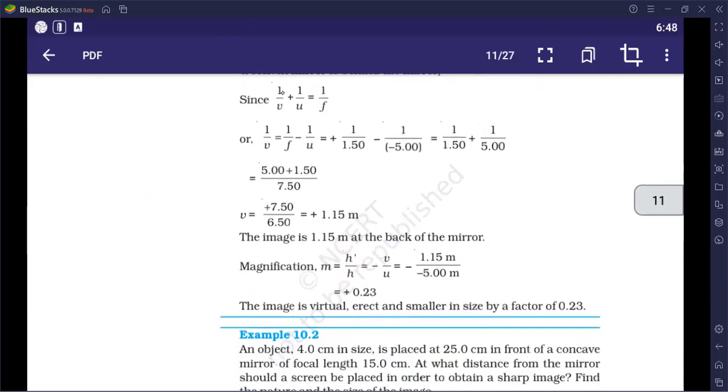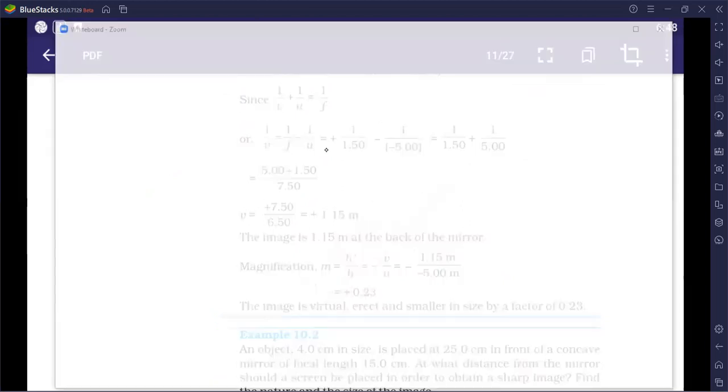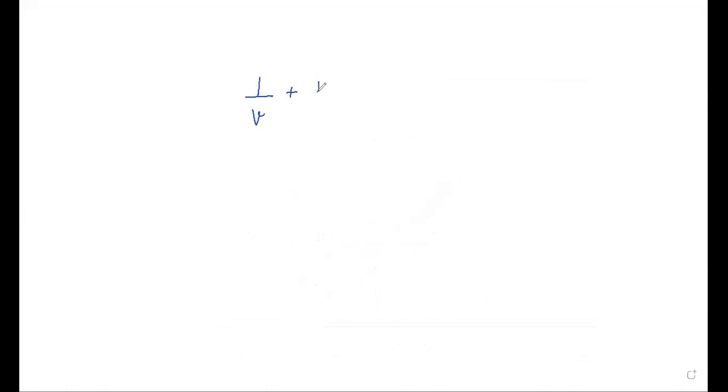Now, we will put formula. 1 by V plus 1 by U is equal to 1 by F. What do we have to find? Image position. What is given? Focal length and U. So, first we rearrange this formula so that what I have to find is on the left hand side. Now, my F value is 1 upon 1.5. 1.5 is positive. Pay attention to this. Minus 1 upon U. U's value was minus 5. Remember that it is minus 5. Very carefully. This will become 1 upon 1.5 plus 1 upon 5.